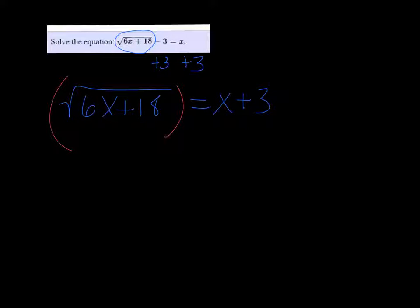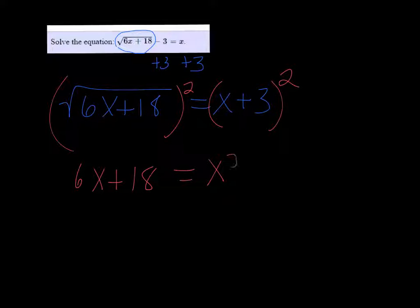Now if we square both sides to get rid of the radical, we're going to get 6x plus 18 on the left. That equals, if we square out x plus 3, x squared plus 6x plus 9.